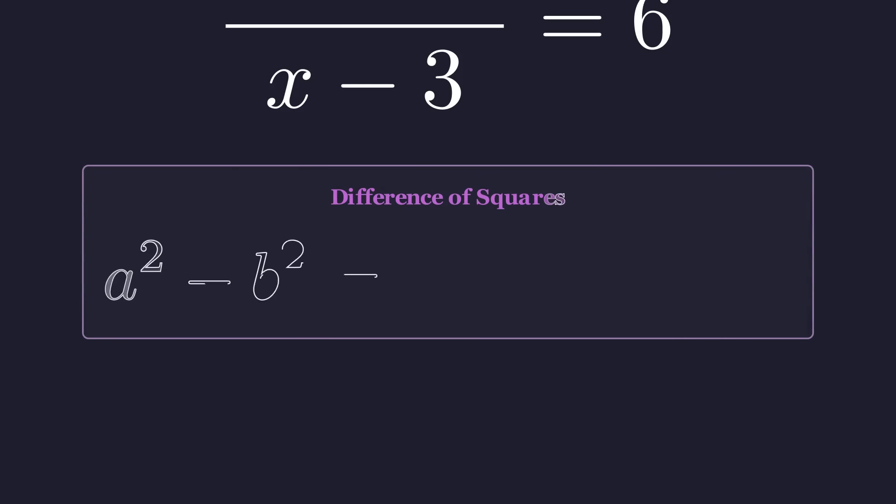The difference of squares pattern tells us that a² - b² factors as (a - b)(a + b). It's one of those really useful factoring shortcuts.